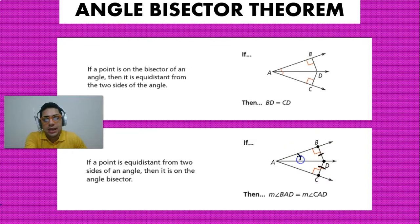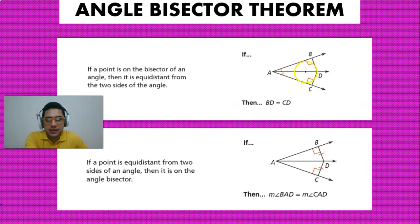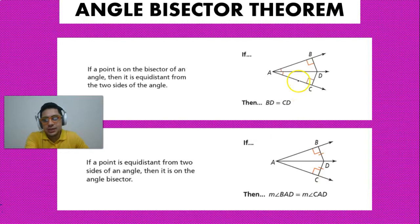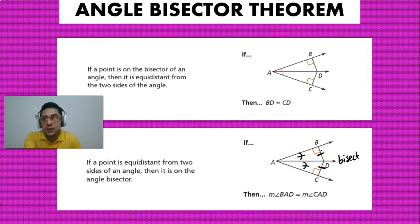Because the distances are equal, it must be — by the angle bisector theorem converse — that angles BAD and DAC are congruent. Remember: in the original theorem, you are given that AD is the bisector, and therefore the distances from D to B and D to C are the same. In the converse, you have the opposite: you're given that the distances from B to D and from C to D are the same, and from that you conclude that XW is the bisector, meaning both angles are congruent because the angle is split in half.